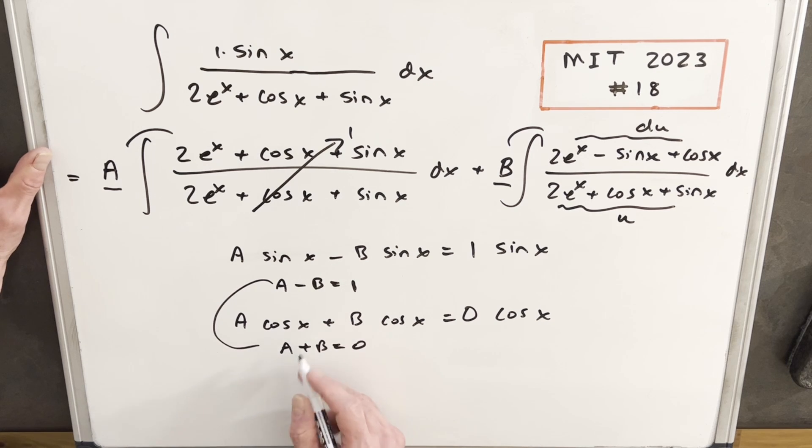We can just add these two together. So if we add those two, we'll have 2a equals 1, or therefore, a equals 1 half.